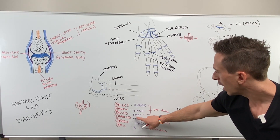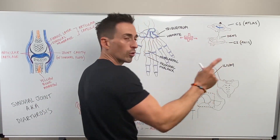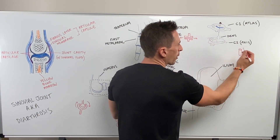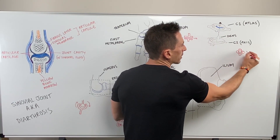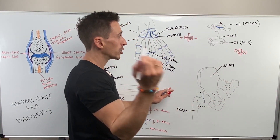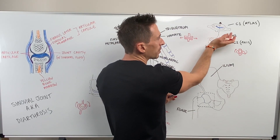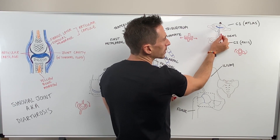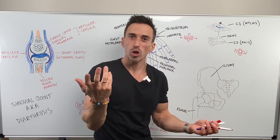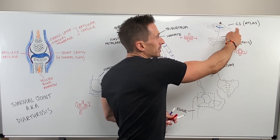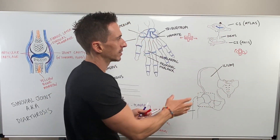Next is the pivot joint. The example is the first and second cervical vertebrae, C1 and C2. It's where a rounded bone sits within a circular bone or ligament and can only move in one axis — it spins and turns around. C2, known as the axis, has a protrusion called the dens which sits underneath C1, the atlas. The dens moves through a ligament, allowing the head to turn. 'Axis' means turning or spinning, and 'Atlas' is named after the god holding the world — or in this case, the skull — above its head.